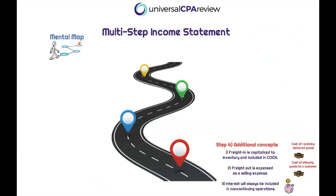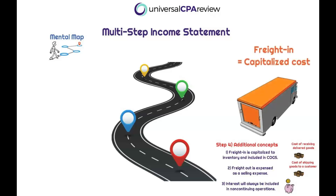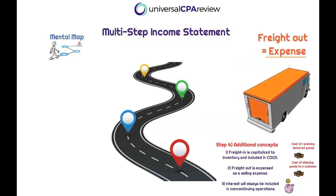The fourth step covers freight in and freight out. Freight in is the cost of receiving delivered goods — it gets capitalized to inventory and included in cost of goods sold when subsequently sold, so it appears on the balance sheet first, then on the income statement when sold. Freight out is the cost of shipping goods to a customer — it's expensed as a selling expense within SG&A in the operating section of the multi-step income statement.